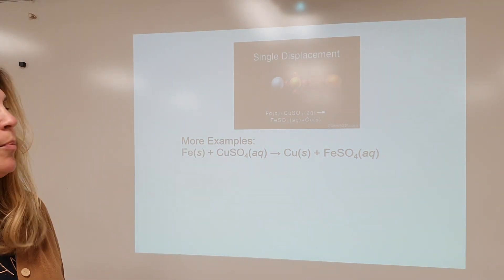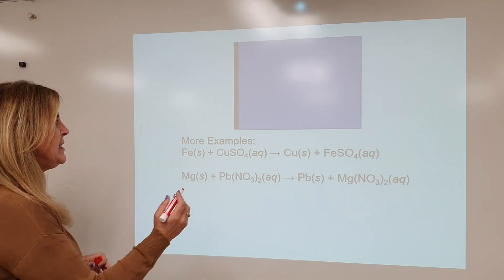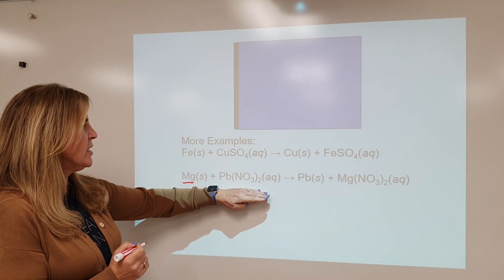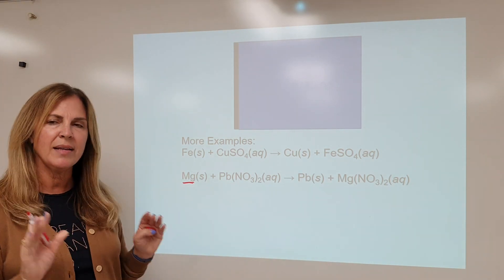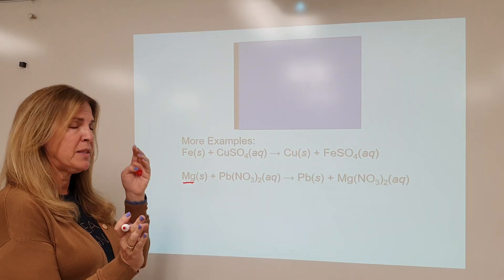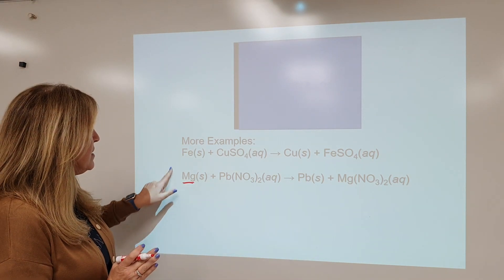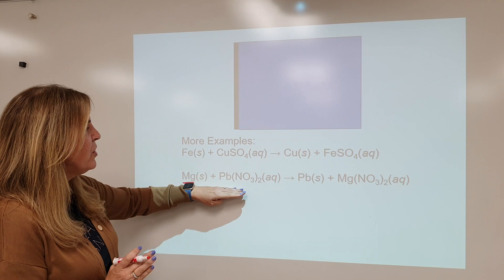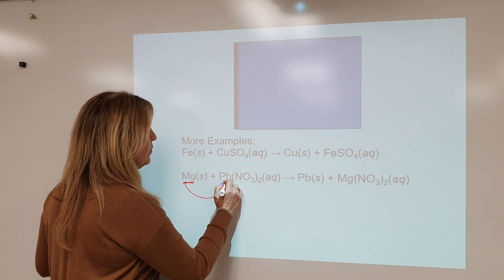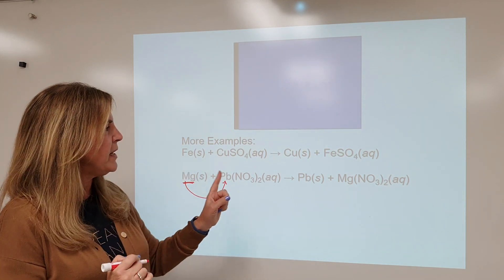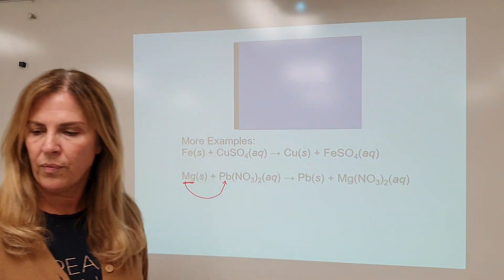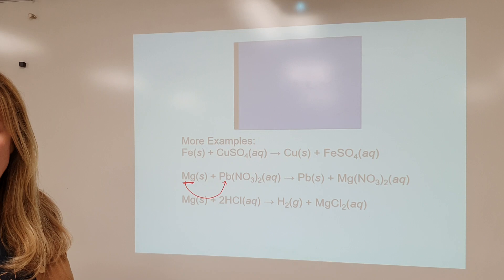Let's look at another example. Magnesium is a metal, and this is a compound. How do I recognize this as single displacement? Element plus compound — it could also be compound plus element. This element is a metal, so the magnesium is going to kick off a metal — it's going to trade places, leaving us with the lead by itself and magnesium nitrate together.